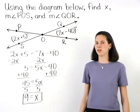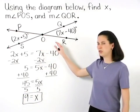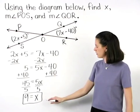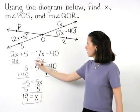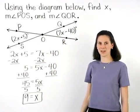To find the measures of angles POS and QOR, we simply plug a 9 back in for the x in either one of our angles.